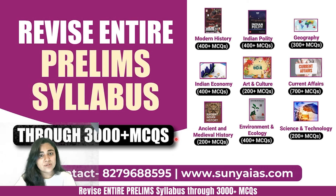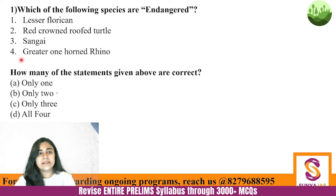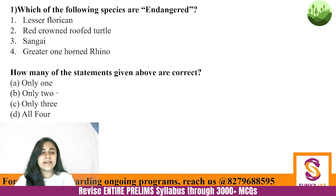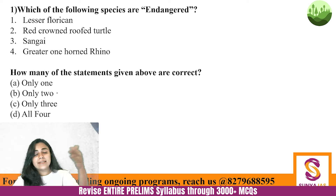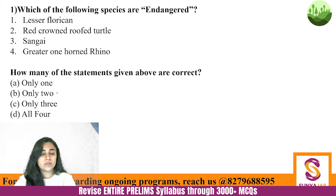Question one: which of the following species are endangered — Lesser Florican, Red Crowned Roof Turtle, Sangai Deer, and Greater One-Horned Rhino? How many are endangered? You know that the IUCN categorizes species according to their status. Let's study all four species and then come back to the question.